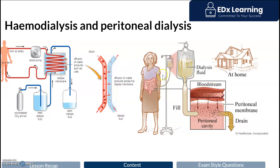Now contrast this with peritoneal dialysis. Whereas in hemodialysis the semi-permeable membrane was the dialysis tubing, in peritoneal dialysis the semi-permeable membrane is the peritoneal membrane. The peritoneum refers to the abdominal cavity, which has its own semi-permeable membrane — as you can see here with small molecules moving through — known as the peritoneal membrane.